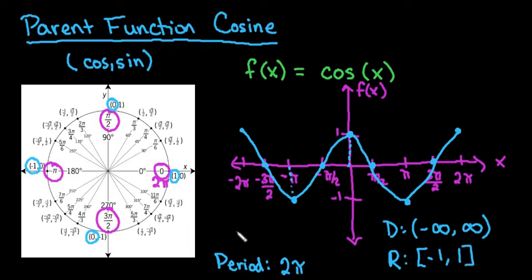If you understand what the parent function looks like and you know that the points that it starts at 1, 0, negative 1, 0, back to 1, it makes it very easy to graph cosine functions.